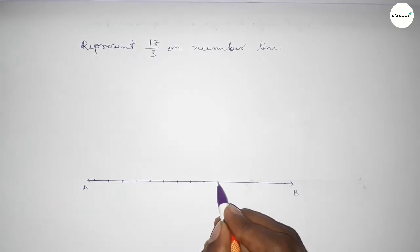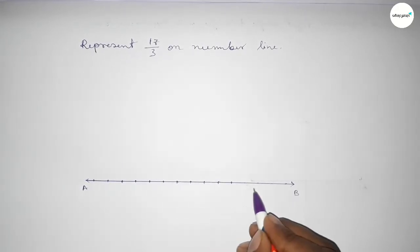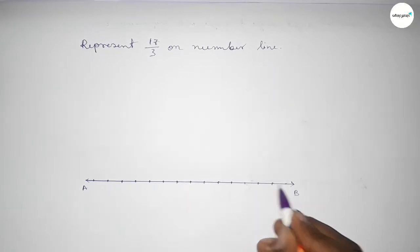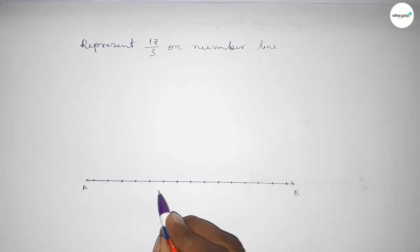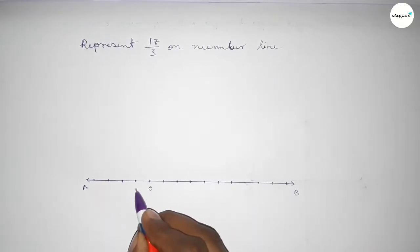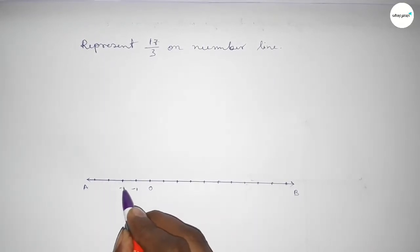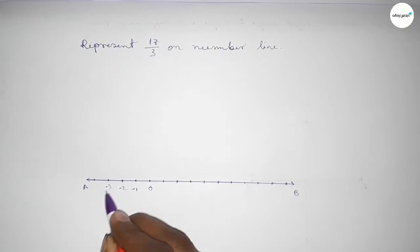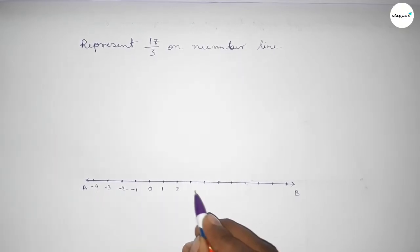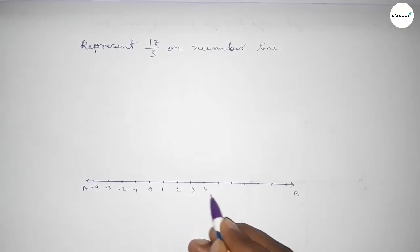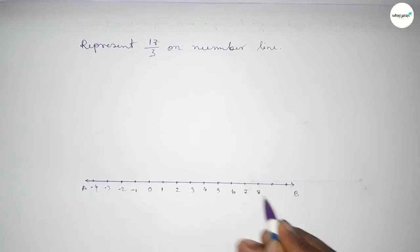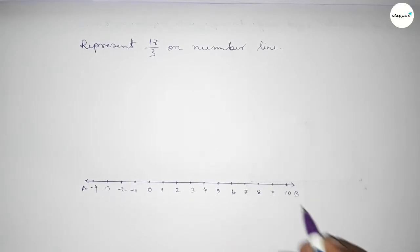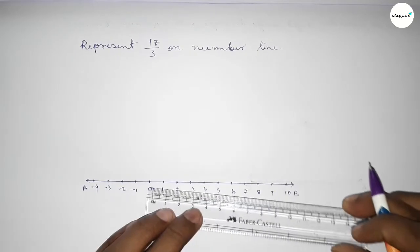Drawing the number line, taking the starting number 0, then minus 1, minus 2, minus 3, minus 4 on the left side, and 1, 2, 3, 4, 5, 6, 7, 8, 9, 10 on the right side. Now we have to divide the distance between any two numbers into three parts approximately.